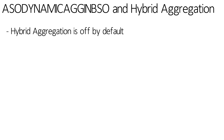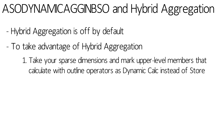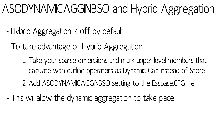Now it's off by default. This might change at some point in the future when they have all the kinks worked out of hybrid aggregation, but at the moment it's off by default. Turning it on is really easy. All we have to do is open up our S-Base block storage outline, go to your sparse dimensions, and if you have any upper level members tagged as either store or dynamic calc in store, you have to switch all of those to dynamic calc. You then need to open up the S-Base CFG file and add one or more ASO dynamic ag and BSO setting lines. You're then going to need to save the outline, stop and restart the server, and it should take advantage of that dynamic aggregation.